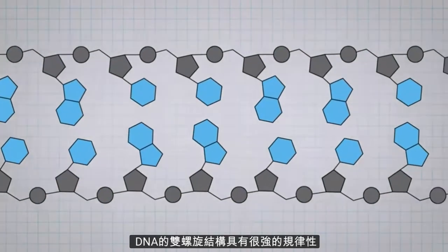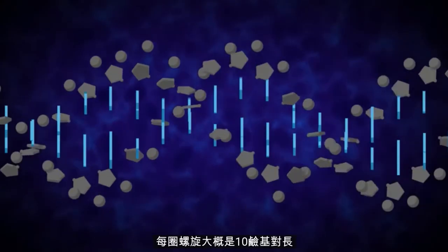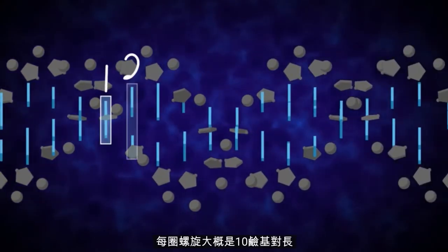The double helix structure of DNA is highly regular. Each turn of the helix measures approximately 10 base pairs.